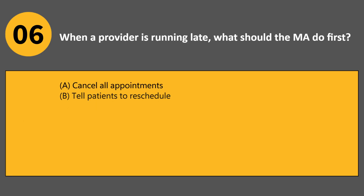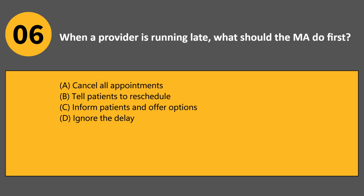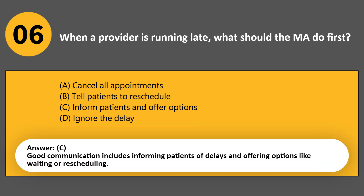When a provider is running late, what should the MA do first? A. Cancel all appointments. B. Tell patients to reschedule. C. Inform patients and offer options. D. Ignore the delay. Answer C. Good communication includes informing patients of delays and offering options like waiting or rescheduling.